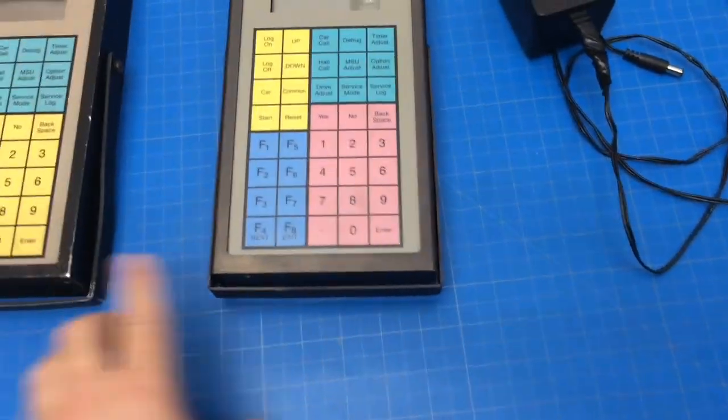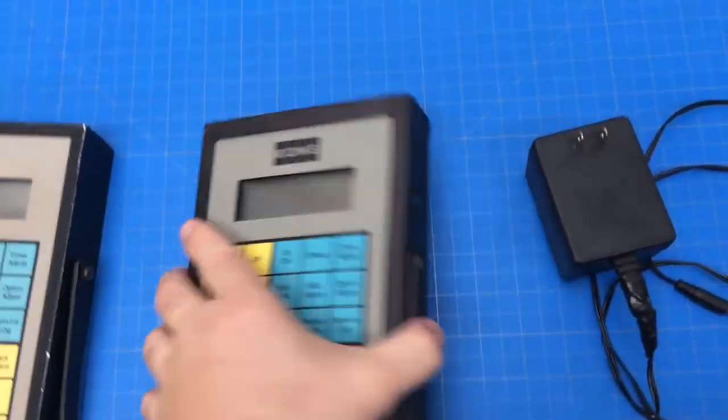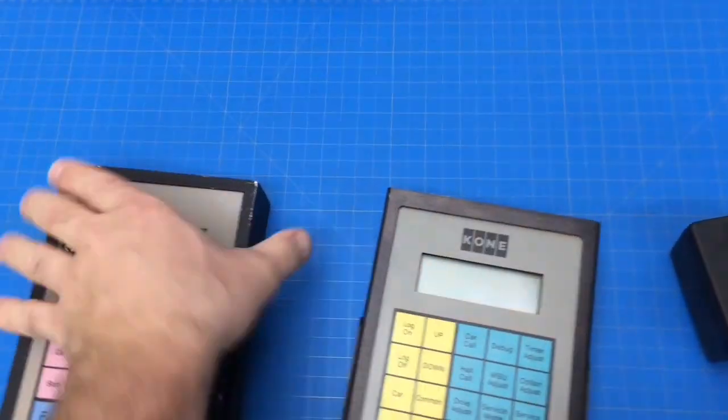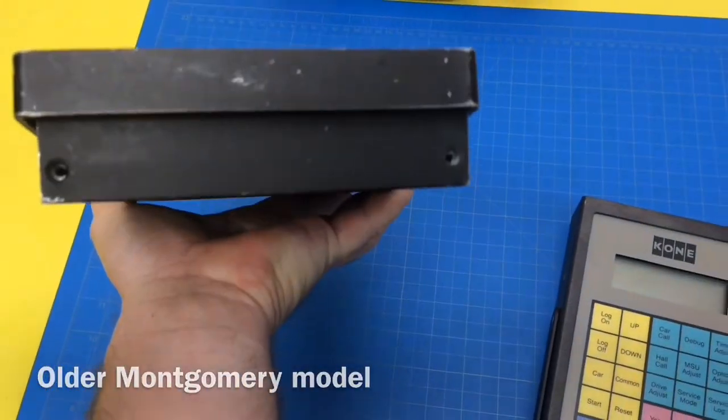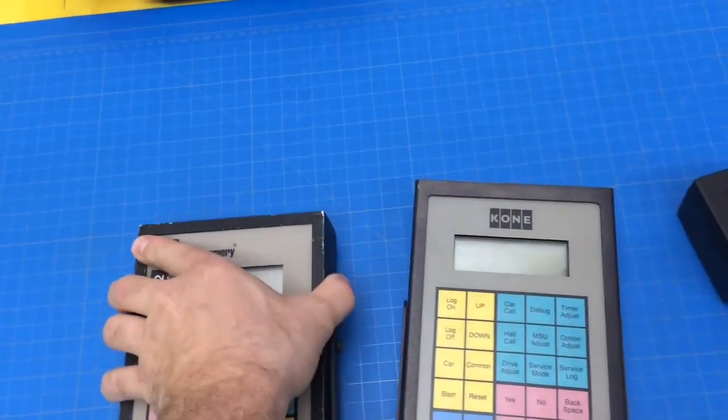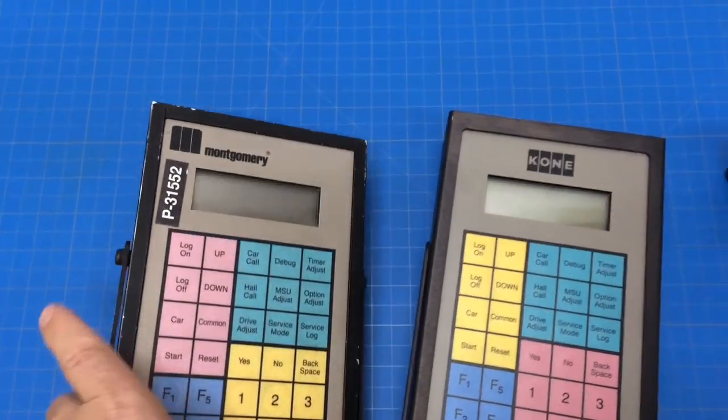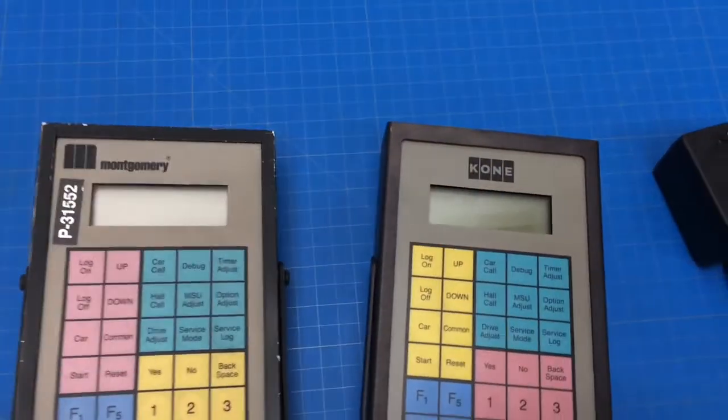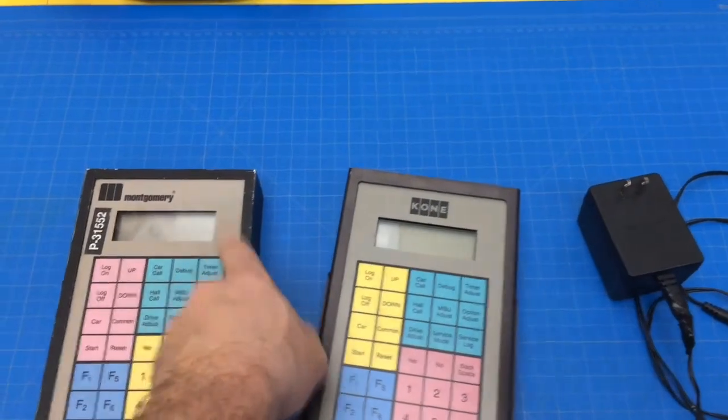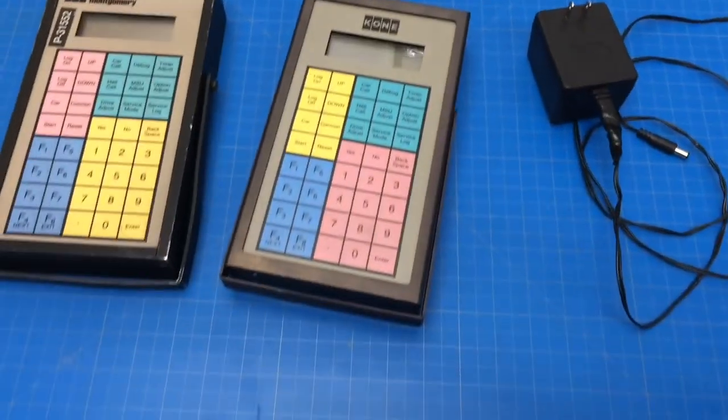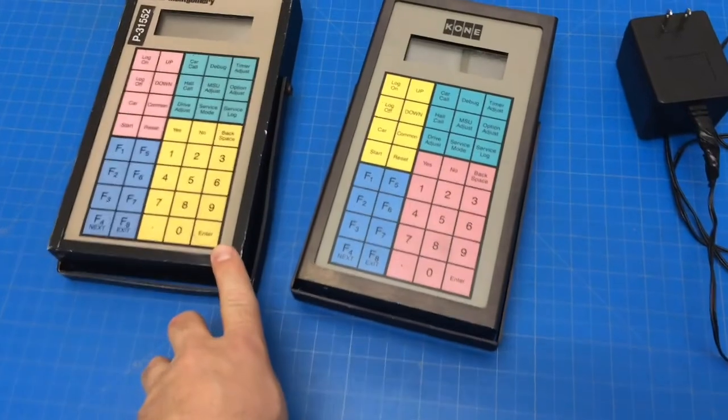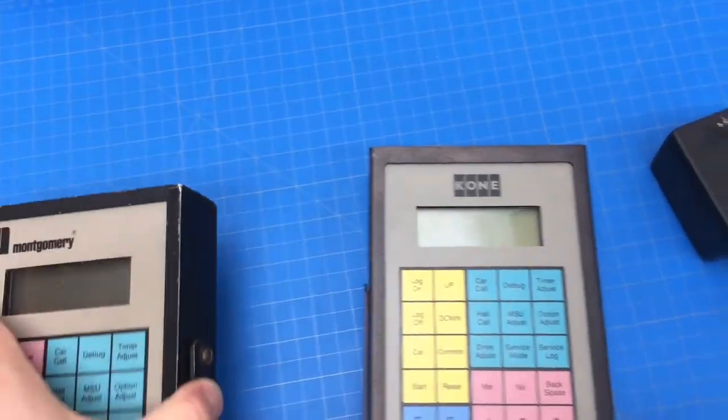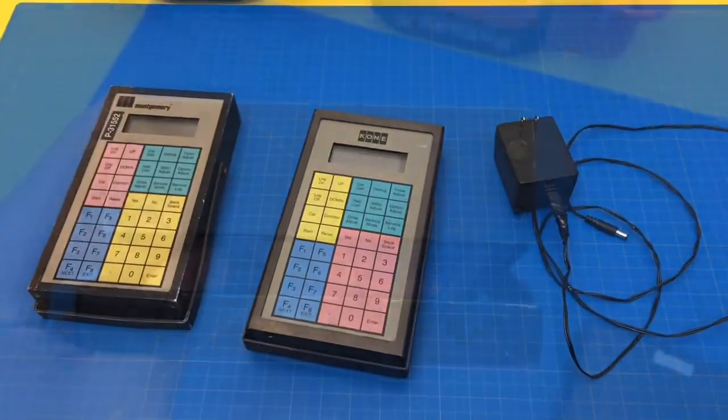I noticed they're slightly different models, built differently. This one looks a lot newer. I believe a company has bought the rights to sell these. Kone still sells them on their website, but I think another company does as well because they own the rights. I don't think they repair them though - I think they'll send you a new one and reboot them when they expire.